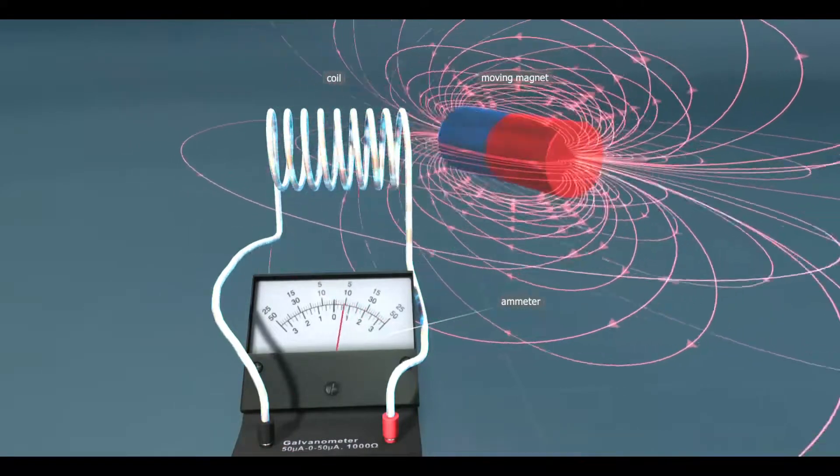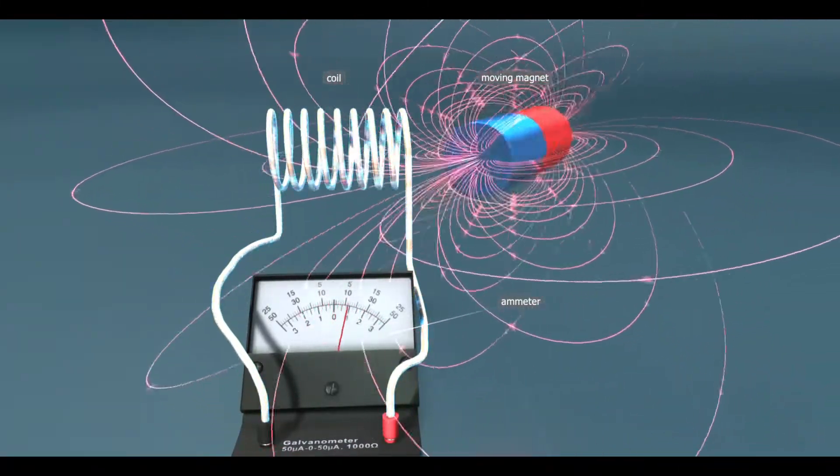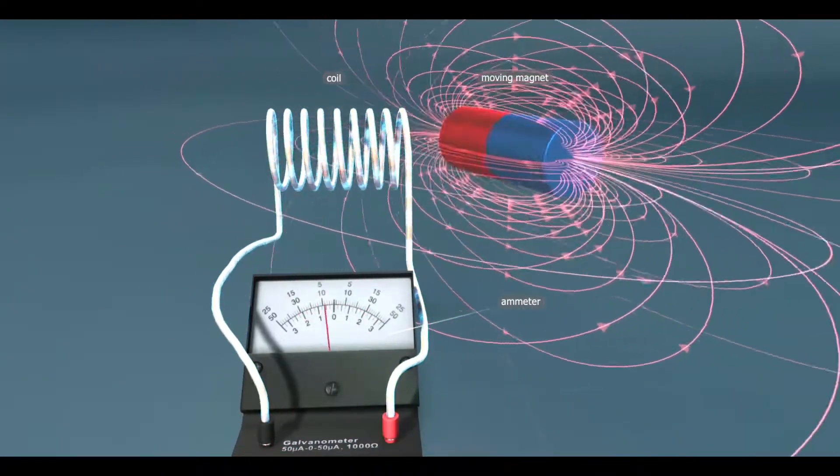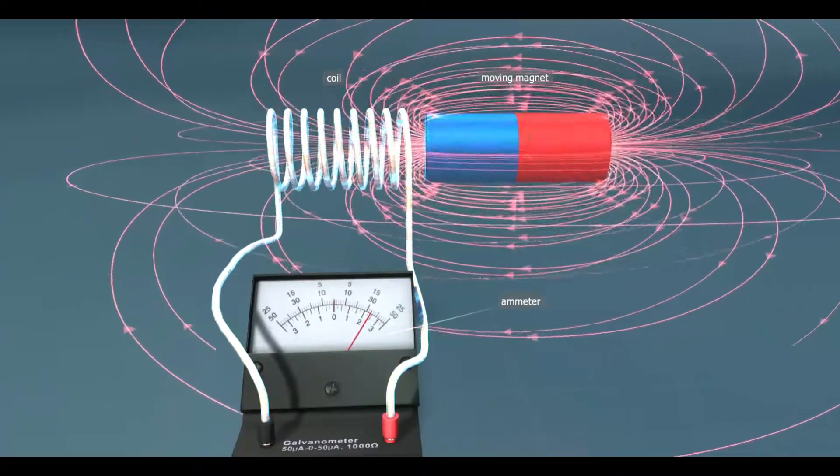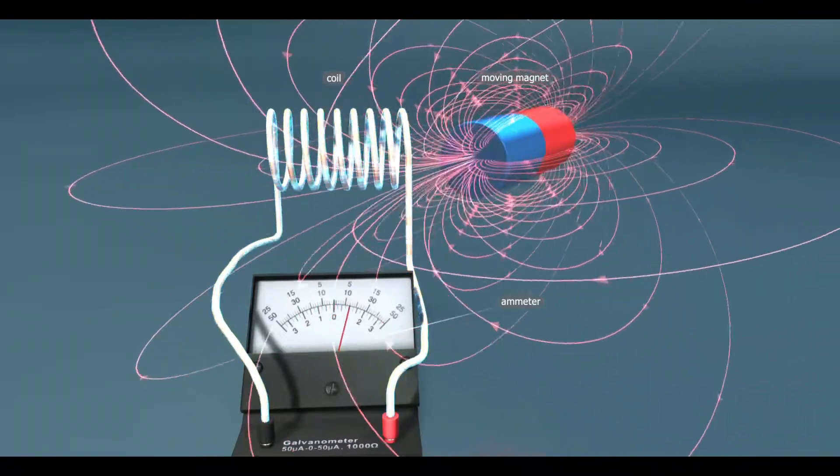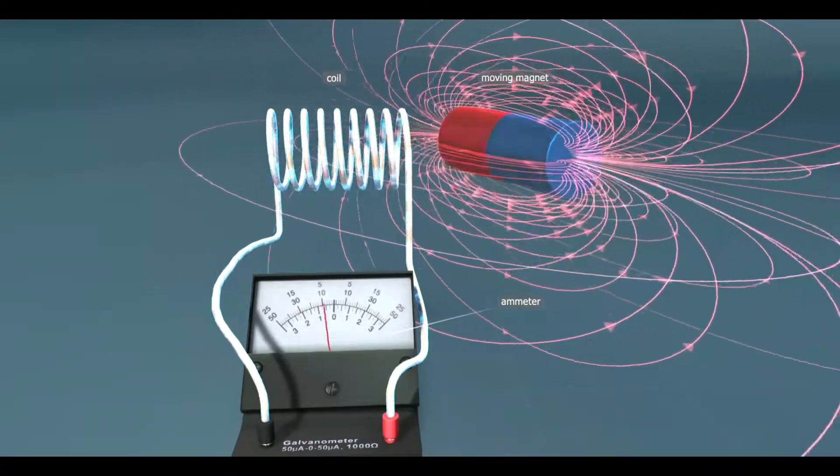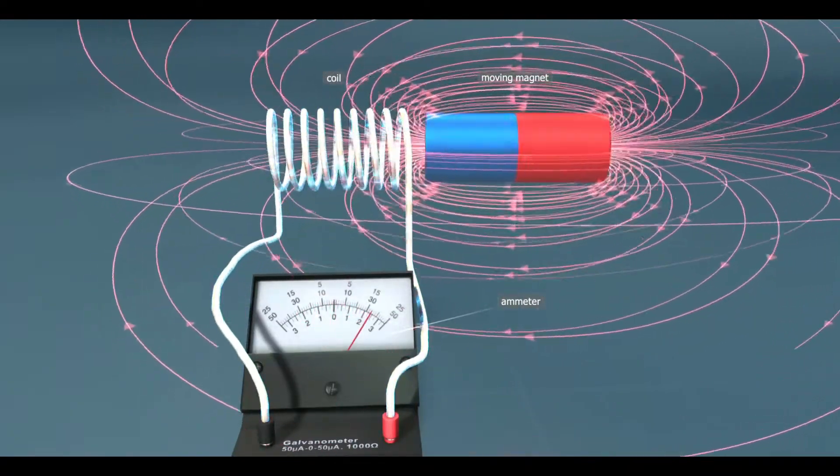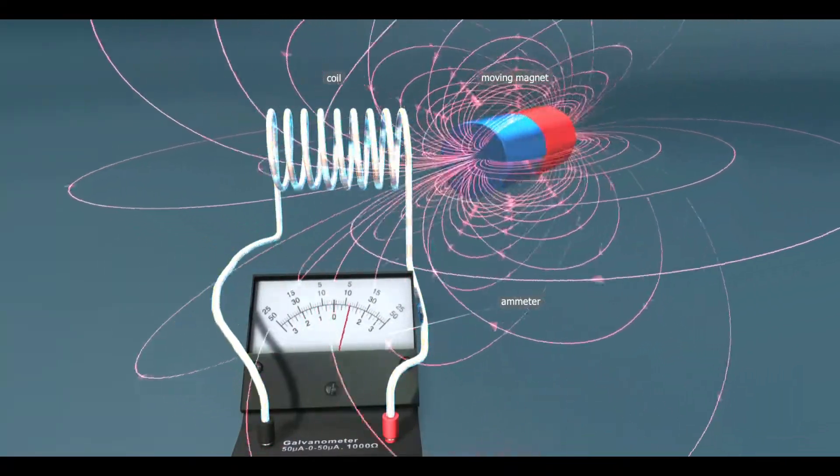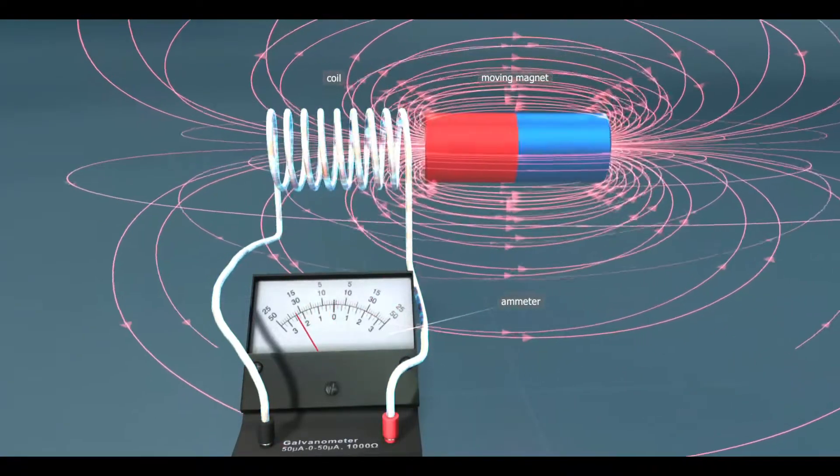Electric current can create a magnetic field, but the magnetic field can also produce electric current. This phenomenon is called electromagnetic induction. Electric current can only be induced by a changing magnetic field. If the magnetic field changes near a coil, a voltage is induced in the coil and an electric current is generated. This current will have a magnetic field, so the two magnetic fields can interact with each other. This phenomenon is used in some electric motors.